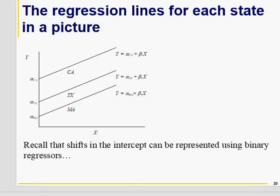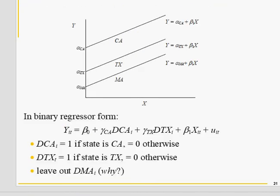We introduce two dummies. You see the intercept is varying, but slope beta one is same. For California, the dummy is one, otherwise zero. For Texas, the dummy is one, otherwise zero. So when both are zero, it means beta naught, which represents Massachusetts. Beta one is the same for all because we are trying to measure the effect of X on Y holding other effects constant, but those other variables are unobserved. Therefore, we need to capture those state-specific effects by introducing these dummy variables.